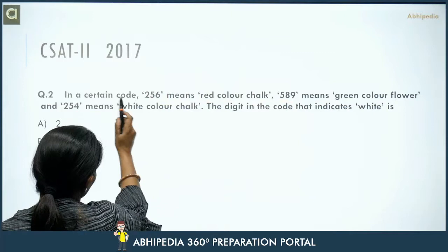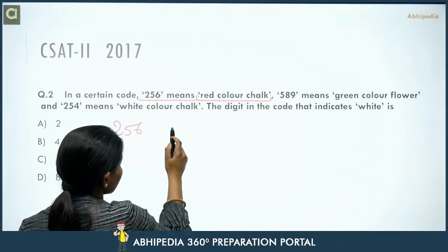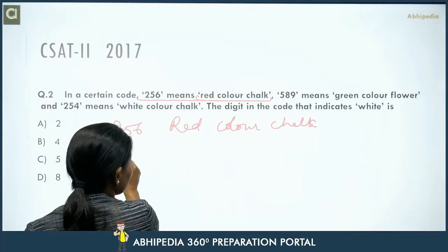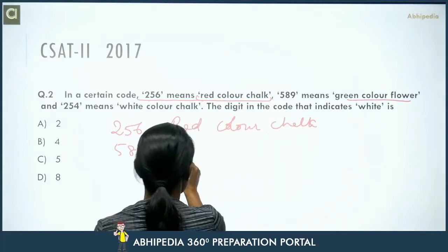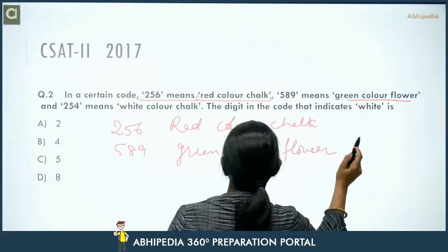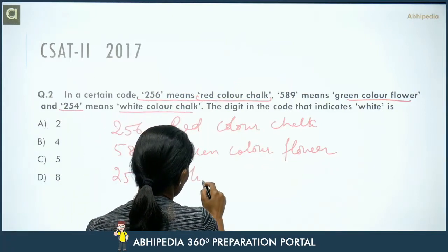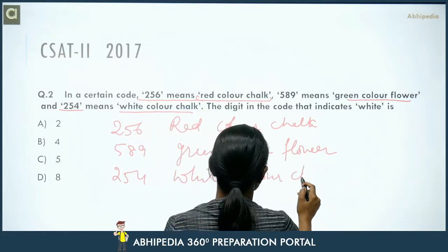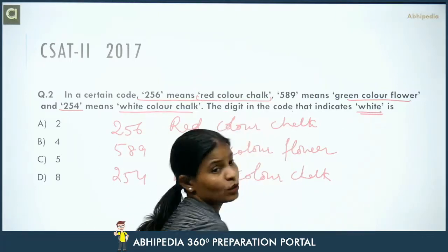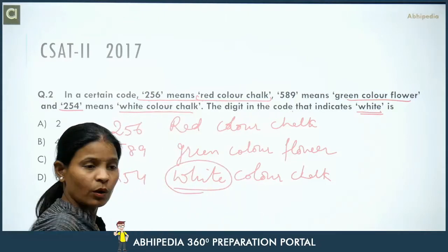Next question: in a certain code, 256 means 'red color chalk', 589 means 'green color flower', and 254 means 'white color chalk'. The question asks: which digit in the code indicates 'white'?